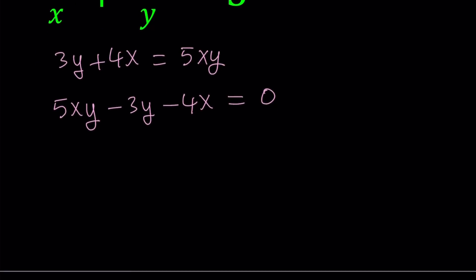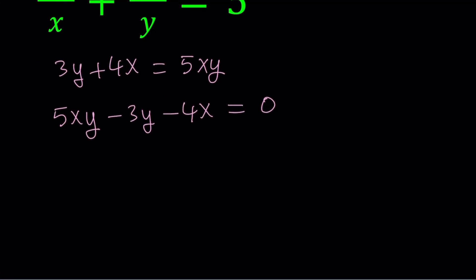Now, I want to make it factorable by grouping, so I will start by taking out some terms from the first two. Since I have y in both of these, I'd like to take out a y, but that's going to leave me 5x minus 3 inside. Instead of y, I want to take out 5y. This is not the standard method. Normally people would just multiply both sides of this equation by something, but I would like to go the fraction route. So I'll take out a 5y. That's going to give me x minus 3 over 5.